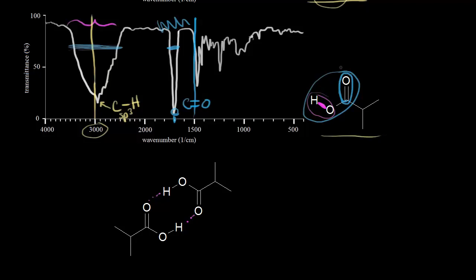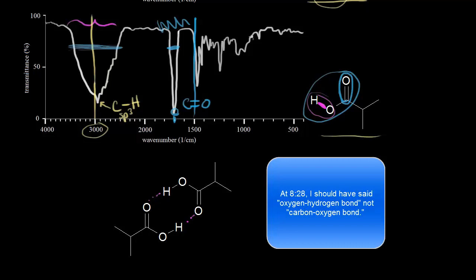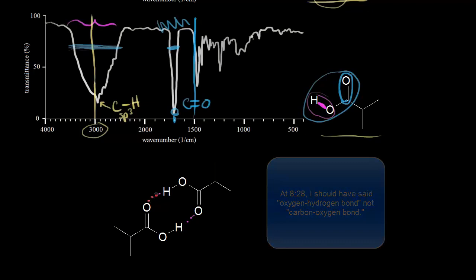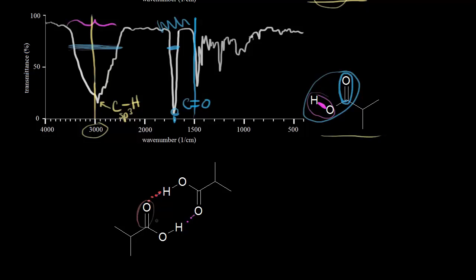A quick note: hydrogen bonding also weakens the carbonyl, decreasing its double bond character a little. So hydrogen bonding actually changes where we find the carbonyl signal — weakening the bond decreases the wave number slightly, making the carbonyl signal a tiny bit lower than expected. This will be discussed more in a later video on carbonyl chemistry. For now, remember: if you see a broad signal, think hydrogen bonding.